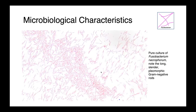Morphologically, the bacteria we're discussing today are all quite different. This is a pure culture of Fusobacterium necrophorum — these are long, slender, pleomorphic, so variably sized and shaped gram-negative rods. Some are a little bit longer, some are a little bit shorter, and some are very long and almost spindle-like.